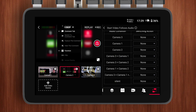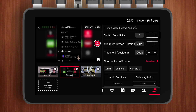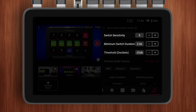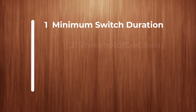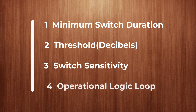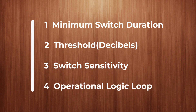Here we can see three parameter settings: Switch Sensitivity, Minimum Switch Duration, and Threshold. Considering the connection between these three parameters, we will introduce them in the following order: Minimum Switch Duration, Threshold, and Switch Sensitivity. In the final section, we will provide two preset solutions based on the list below, which you can directly apply to your live stream.